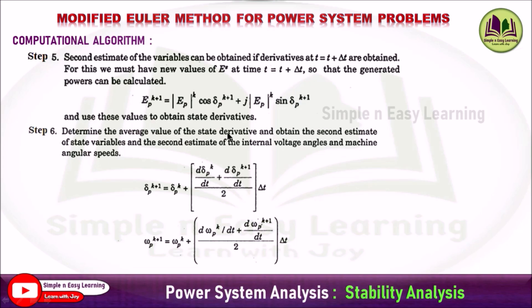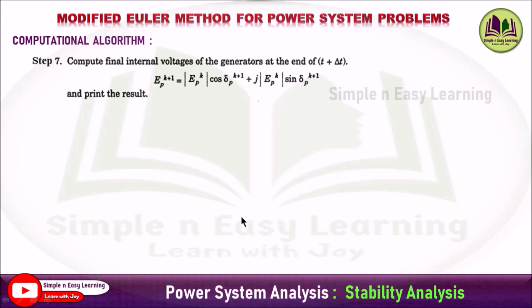Step 6 — determine the average value of the state derivative and obtain the second estimate of state variables, including the second estimate of internal voltage angles and machine angular speed. Delta-p power k+1 equals delta-p power k plus the average of (d-delta-p/dt plus d-delta-p power k+1/dt) divided by 2, times delta-t. Similarly, omega-p power k+1 equals omega-p power k plus the average value times delta-t. Step 7 — compute the final internal voltage of the generators at the end of t plus delta-t, incrementing the time to t plus delta-t. The final voltage is Ep power k+1 equals magnitude of Ep power k times cos(delta-p power k+1) plus j times magnitude of Ep power k times sin(delta-p power k+1). Print the result.